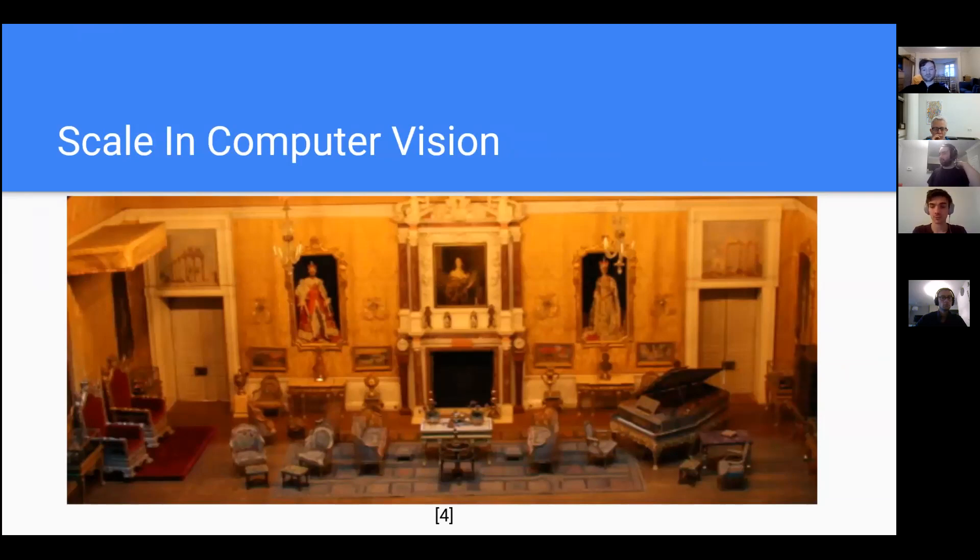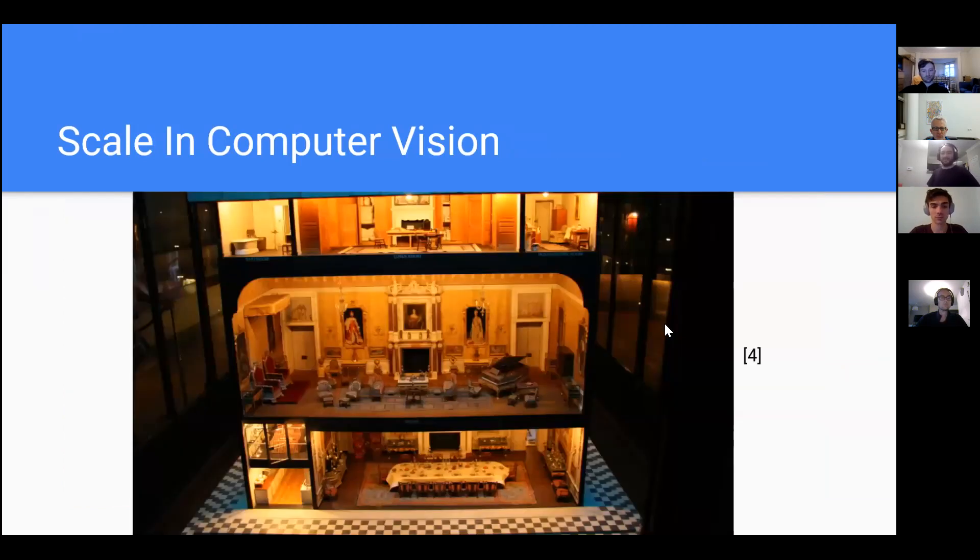So the first thing I'll talk about is scale in computer vision. So it appears that we're looking from the corner of a room high up, perhaps off of a balcony, looking down. You see the chairs, fireplace. But in actuality, it was really just a dollhouse. So what happened there?